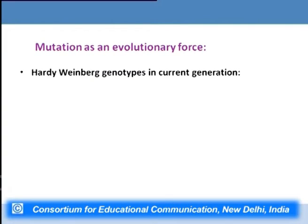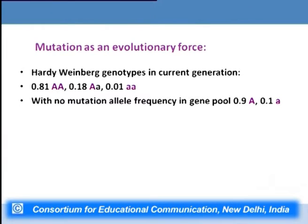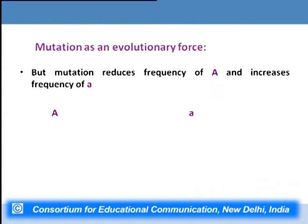Using Hardy-Weinberg genotypes for the current generation with two alleles A and a: the frequency of dominant homozygous AA is 0.81, heterozygous Aa is 0.18, and recessive homozygous aa is 0.01. With no mutation, allele frequency in the gene pool stays constant at 0.9 for A and 0.1 for a from one generation to the next. But mutation reduces the frequency of capital A and increases the frequency of small a.